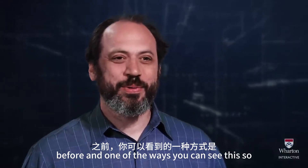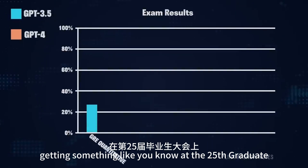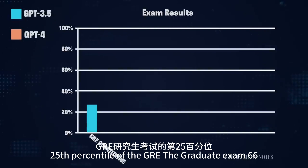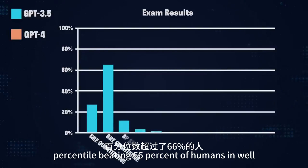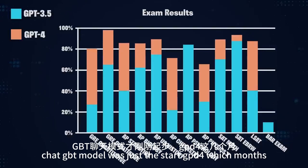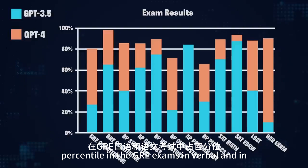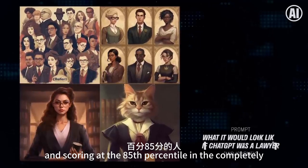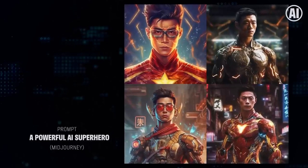And one of the ways you can see this is by looking at test scores. Previous large language models couldn't do tests at all. And then ChatGPT started to score really well — at the 25th percentile of the GRE quantitative exam, 66th percentile in GRE verbal, beating 66% of humans, doing really well on the AP exams and SATs, completely unexpectedly. And GPT-4, released just a few months later, was scoring in the 99th percentile in the GRE verbal exams and at the 85th percentile in the law exam. This was a completely unexpected thing. We didn't expect these AI models to be as capable, as powerful, or to advance as quickly as they have.